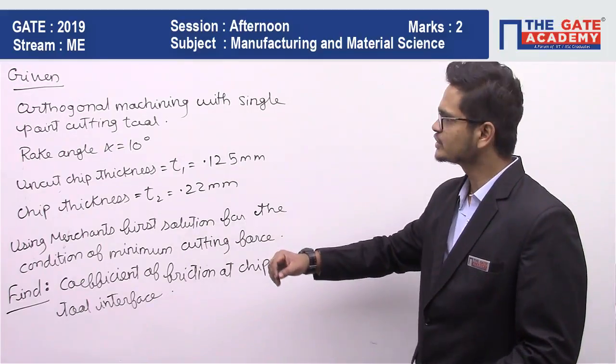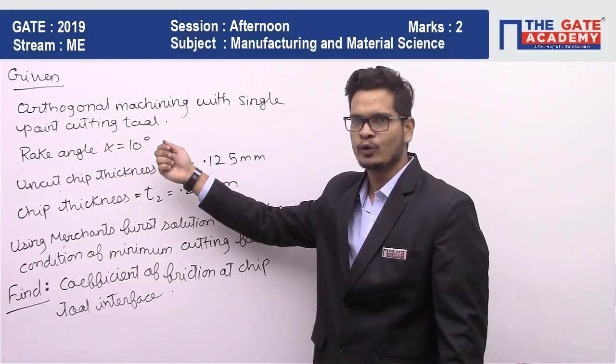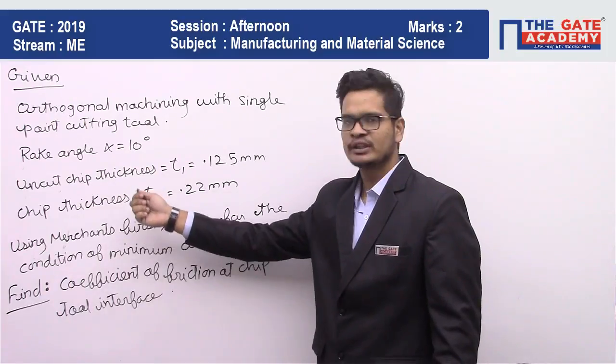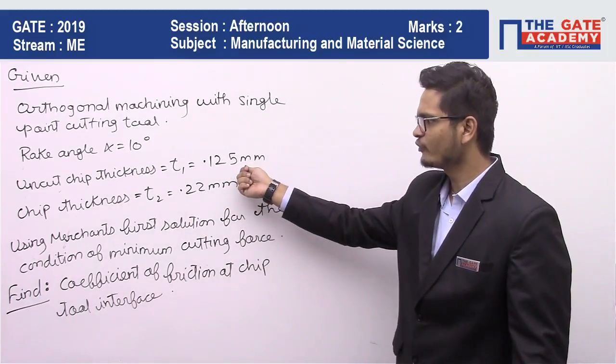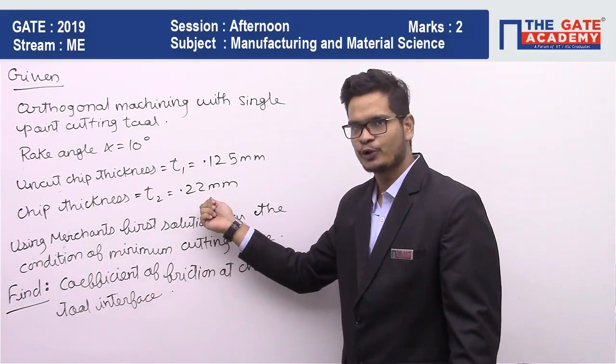So the question is: in orthogonal machining with single point cutting tool, the rake angle is 10 degrees, uncut chip thickness is 0.125 mm, chip thickness is 0.22 mm.